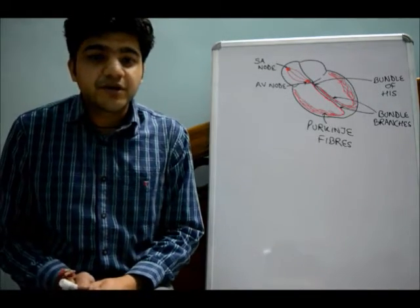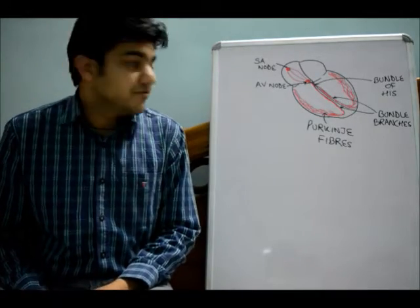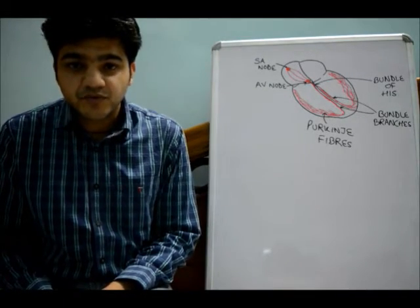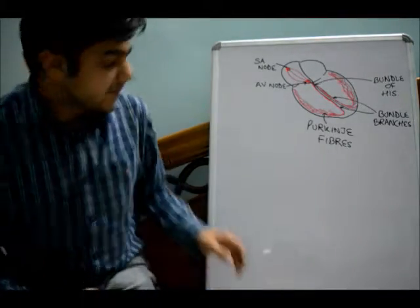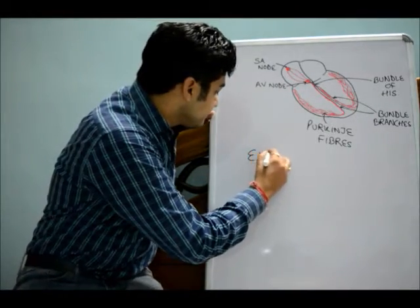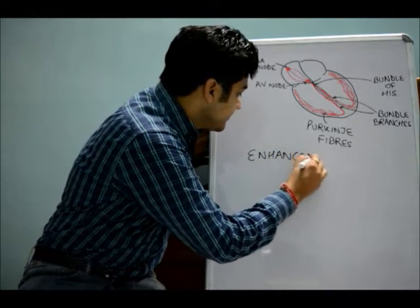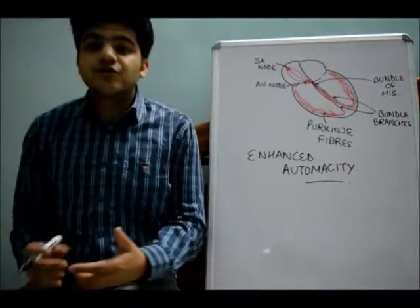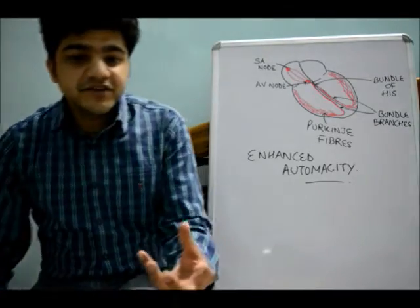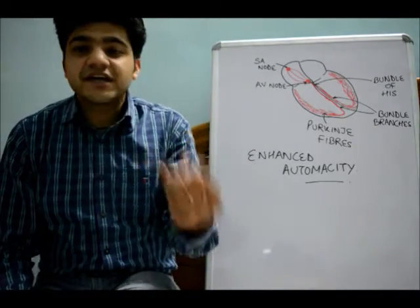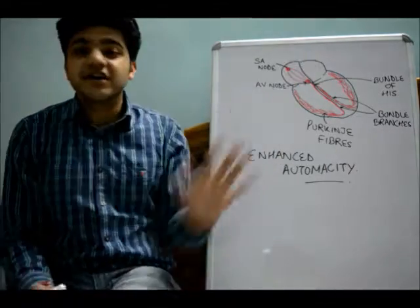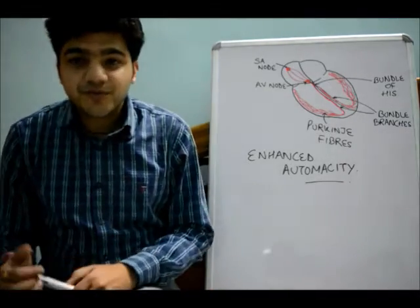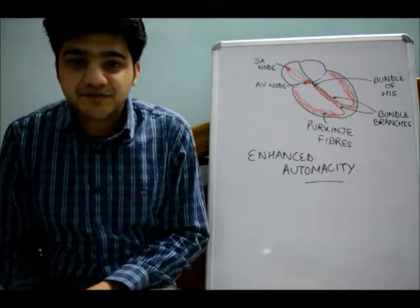The more important topic is how tachyarrhythmias are generated. There are three basic principles. The first is enhanced automaticity. Automaticity is the tendency of a fiber to generate an action potential on its own, which is fastest in the SA node. The SA node is under the influence of the autonomic nervous system through both sympathetic and parasympathetic influences.